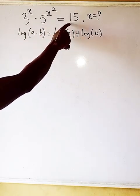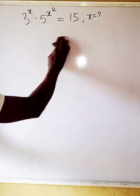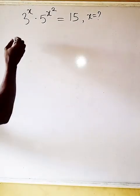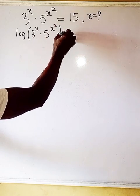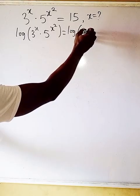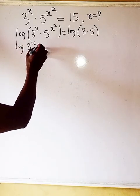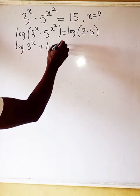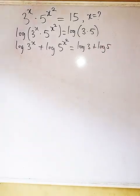We're going to introduce logarithm to both sides of the equation. So we have log of 3^x multiplied by 5^(x²) equals log of 15. Now 15 can be written as 3 times 5, so applying the log product rule: log(3^x) + log(5^(x²)) = log 3 + log 5.